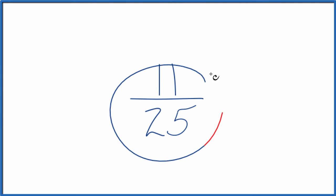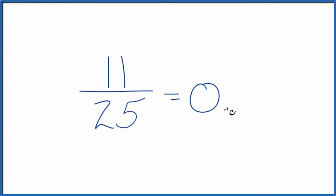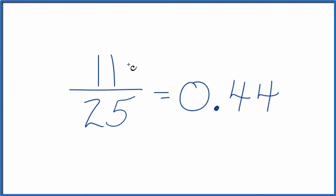Let's write the fraction 11/25 as a decimal. There's two ways we could do this. One, you could just divide 11 by 25 on your calculator and you end up with 0.44. So the fraction 11/25 can be written as a decimal, 0.44. They have the same value.